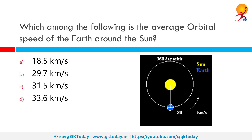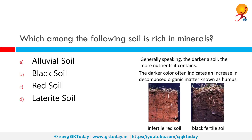Which among the following is the average orbital speed of the earth around the sun? The correct answer is 29.7 kilometers per second. The orbital speed of the earth around the sun averages about 29.7 kilometers per second, which is fast enough to cover the planet's diameter in 7 minutes and the distance to the moon of 384,400 kilometers in 4 hours.